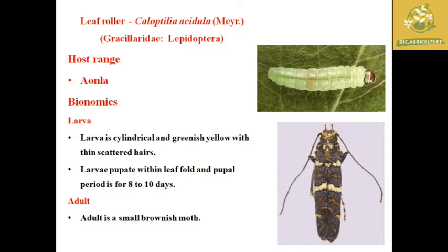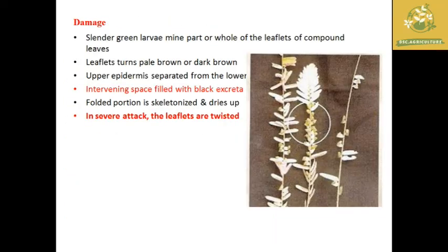The first pest is the leaf roller, with scientific name Caloptilia acedula, family Gracilariidae, order Lepidoptera. This insect affects only Amla. Regarding its bionomics, the larva is cylindrical and greenish-yellow with thin scattered hairs. The larva pupates in a leaf fold, and the pupal period is around 8 to 10 days. The adult is a small brownish moth.